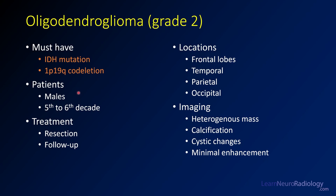There's a slight male predominance for these tumors and they tend to affect middle-aged males. Treatment is resection and follow-up; sometimes chemoradiation is given at onset, sometimes at the time of recurrence, depending on physician preference. Many of these are in the frontal or temporal lobes — supratentorial, in the hemispheres.